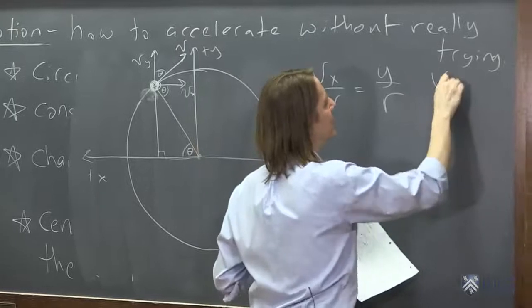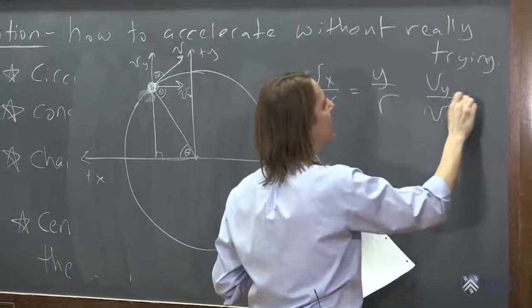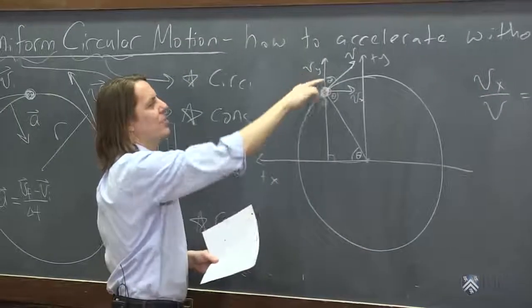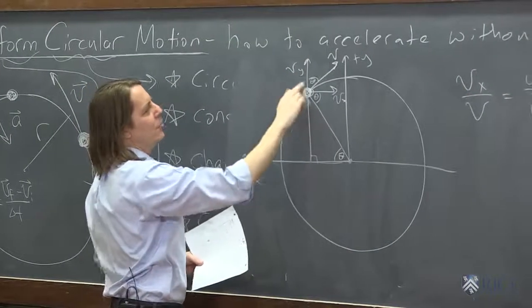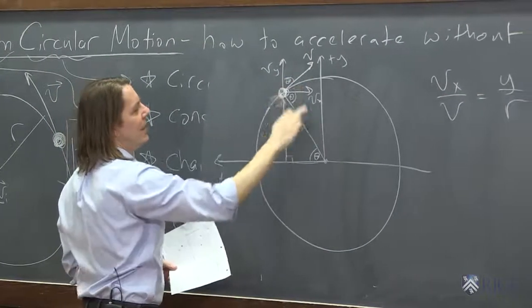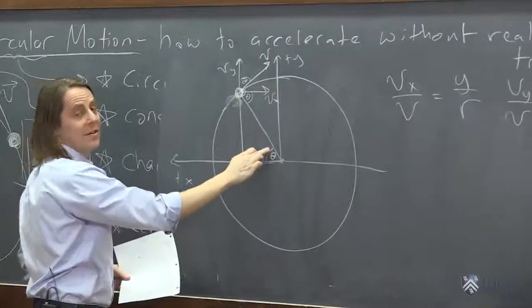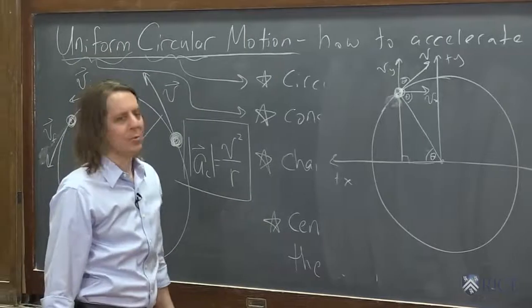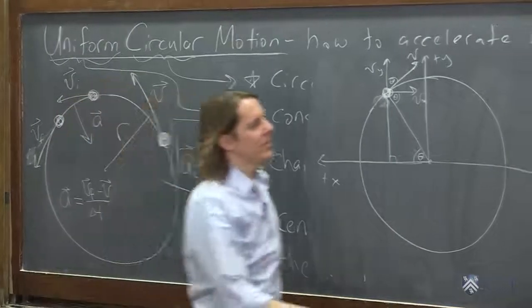The y component of the velocity is to the velocity as the x component is to the radius. You can see this one better because the theta is there. Right? The y component is to this as the x component is to that. Similar triangles or the sine thetas are the same or something like that. So we could say that. All right? That's somewhat amusing, I guess.